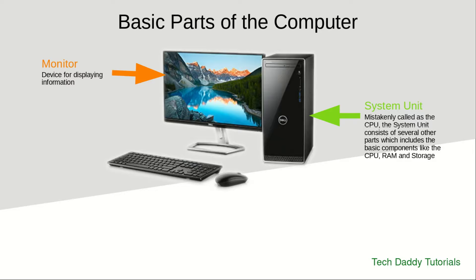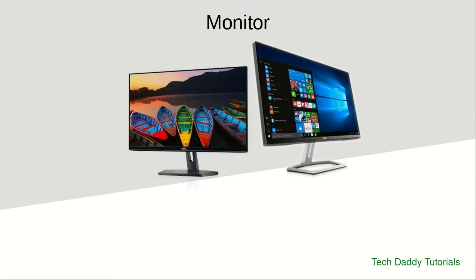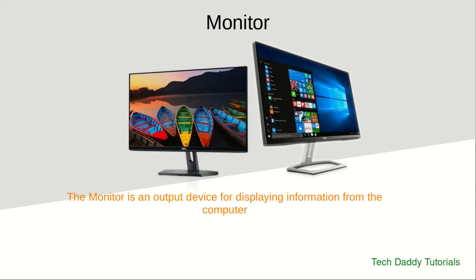So the next time they ask you what this thing is, you can tell them that this is not a CPU — the CPU is inside the system unit. The next is the keyboard, which is used as an input device to enter commands and instructions to the computer. And lastly we have the mouse, a type of input device used to select files, icons, and menus from the screen.